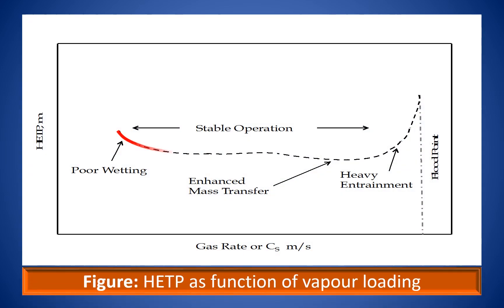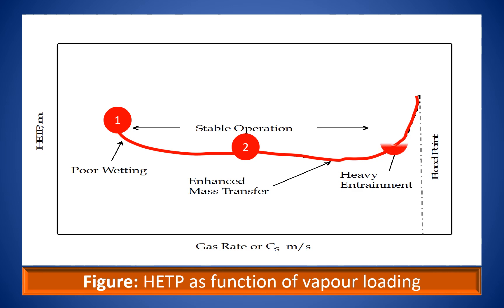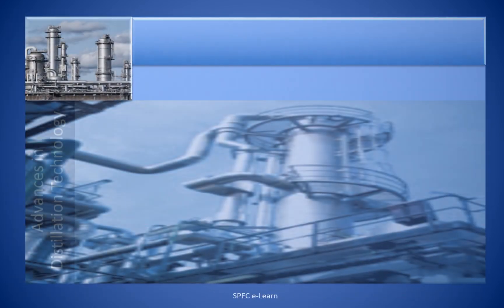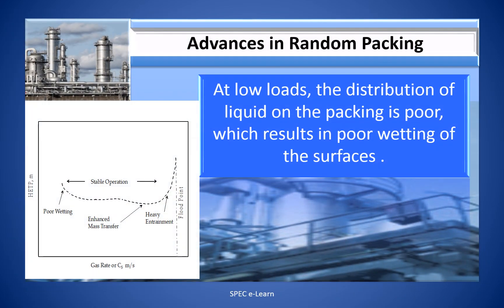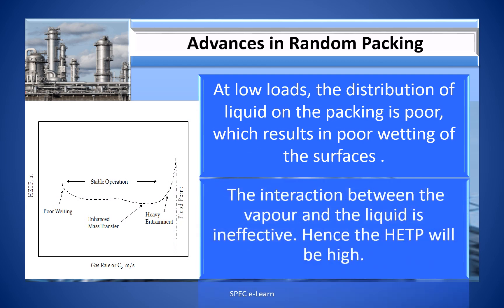This figure illustrates HETP as a function of vapor loading represented by C-factor Cs. You can observe there are three regions in the graph — Region 1, 2, and 3. At low loads, distribution of liquid under the packing is poor, resulting in poor wetting of surfaces. The interaction between vapor and liquid is ineffective, hence HETP will be high. This is Region 1, illustrated in the figure.